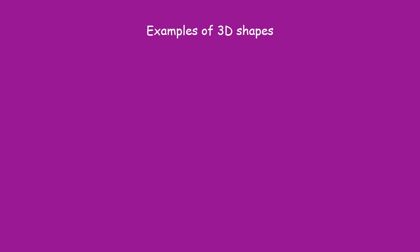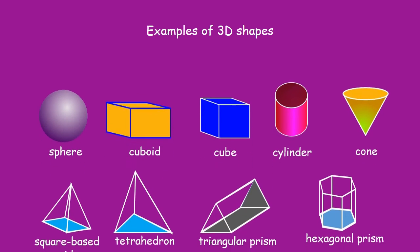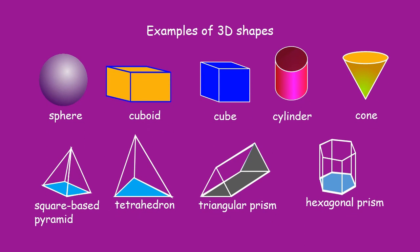Let's give some examples of 3D shapes. Examples of 3D shapes may include sphere, cuboid, cube, cylinder, cone, square-based pyramid, tetrahedron, triangular prism, and hexagonal prism. Again, we have more 3D shapes than we have over here.